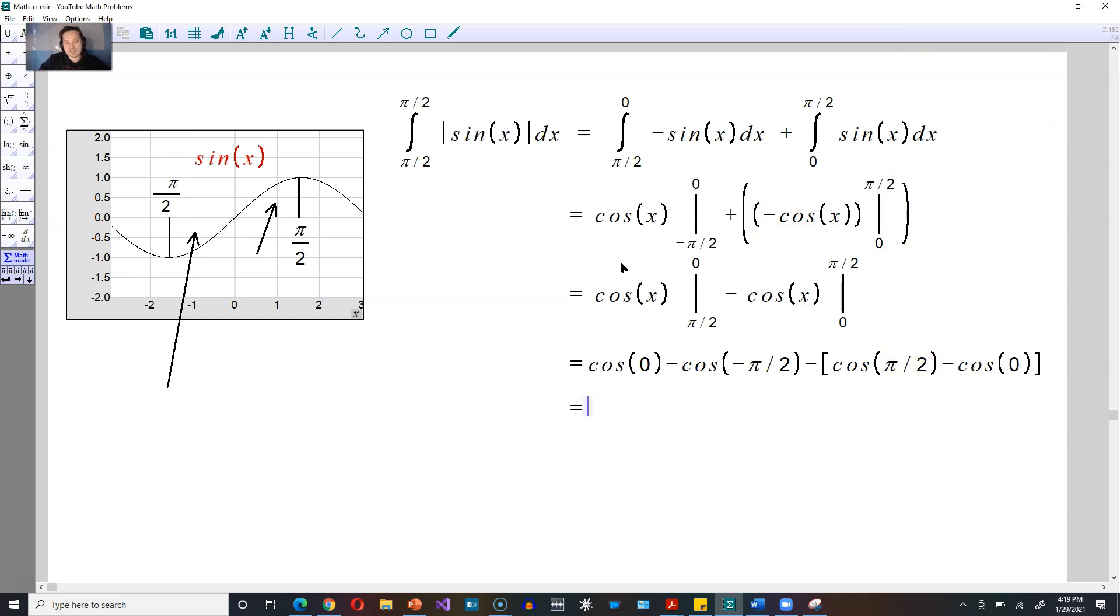Then just work these values out. Cosine of 0 from the unit circle is equal to 1. Cosine of negative π/2 is 0 from the unit circle minus, again brackets to be careful, cosine of π/2 is 0, minus cosine of 0 which is 1.